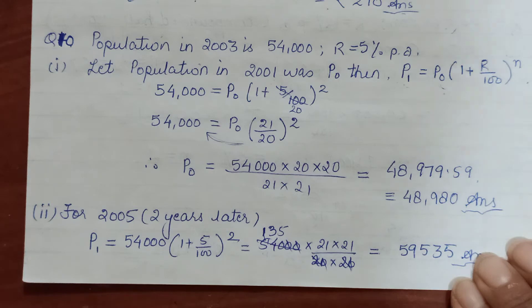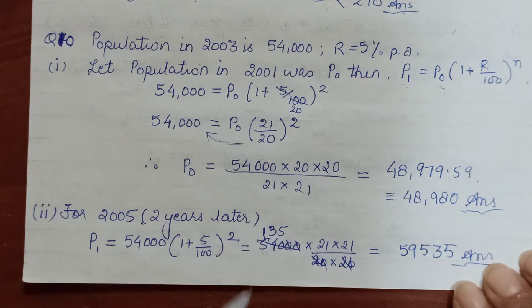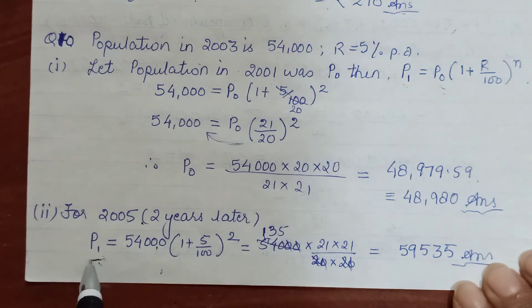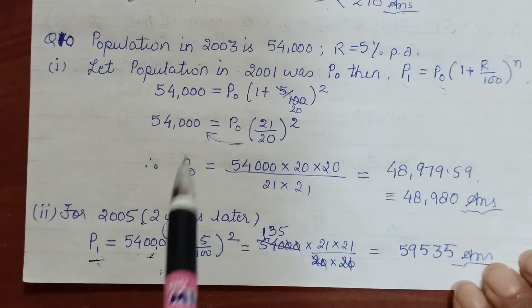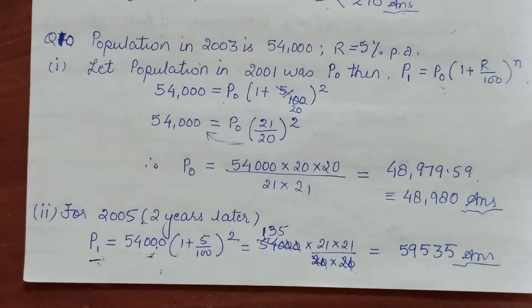Second part: find 2005's population. Now that's a later value. 2003 has 54,000; you need to find later, meaning this side. 54,000 you will keep here. 1 + R/100. Time is 2 because from 2003 to 2005 is 2 years. Do the calculation and get your answer.